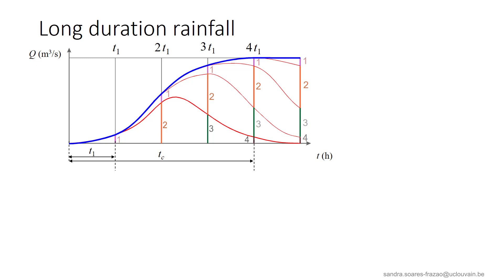A second method can be applied when the available data correspond to a long-duration rainfall of constant intensity, which is rather seldom but possible. In such a case, the resulting hydrograph can be obtained by the addition of hydrographs corresponding each to a short uniform rainfall. As a result, the total hydrograph presents an S-shape as illustrated here. This S-shaped hydrograph is the result of adding a short uniform rainfall hydrograph to itself repeatedly with delay t1, continuing the process results in the blue S-shape.